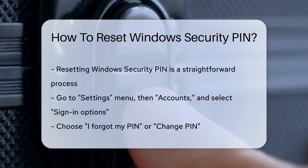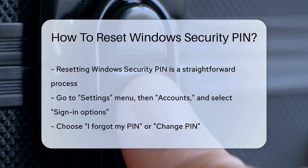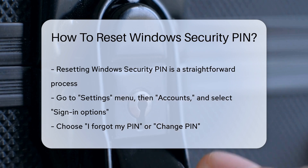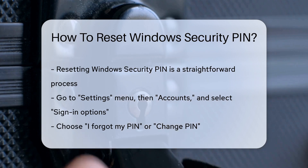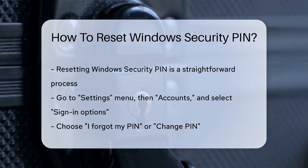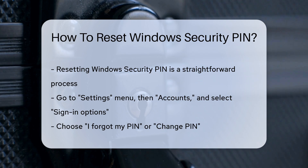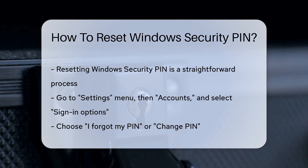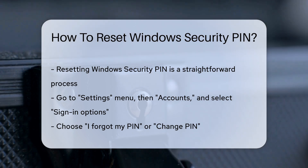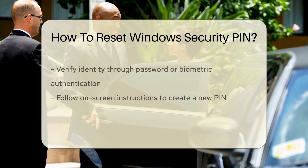First, navigate to the Settings menu on your Windows device. Next, select the Accounts option and then choose Sign In Options. Look for the section related to the PIN and select the I Forgot My PIN or Change PIN option.